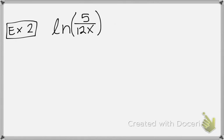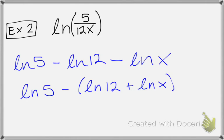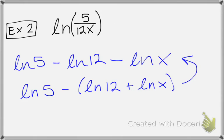Let's try one more. I can see that I'm going to have three different logarithms when I expand — one for 5, one for 12, and one for x. My 12 is in the denominator, so that logarithm will be negative, and my x is also in the denominator, so that will also be negative. Another way to think about it: I'm starting with 5 and then dividing by a product, so you could write it with parentheses since you are multiplying 12 and x. Once you distribute that negative, you end up with the same thing. The general rule is: if the value is in the denominator, your logarithm will be negative; if the value is in the numerator, your logarithm will be positive.